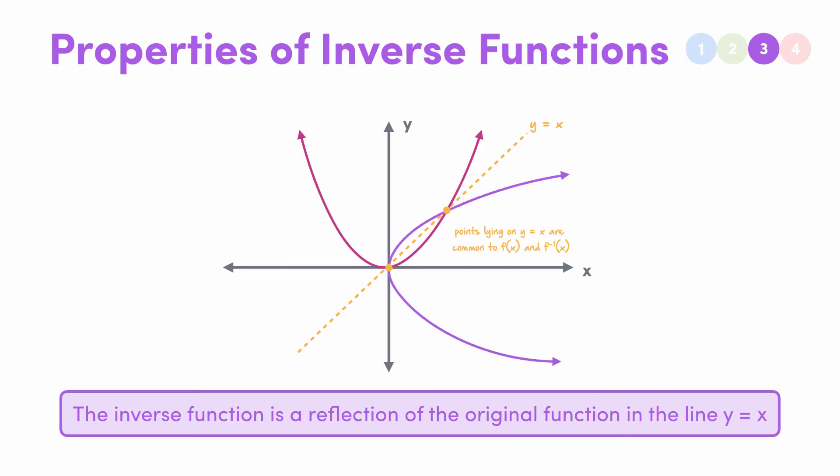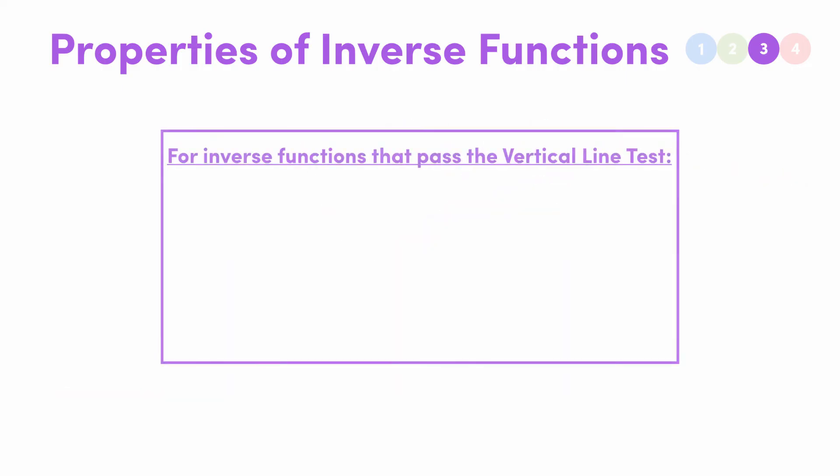Another thing to come out of this reflective property is that the higher above the line y equals x that our original function goes, the further to the right of y equals x the inverse is pushed. Out of this comes a very important property. For functions that have an inverse function, so here this means a function that passes the vertical line test, so it has a one-to-one relationship, it has this property.